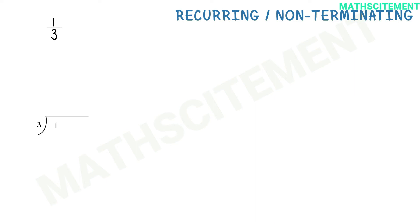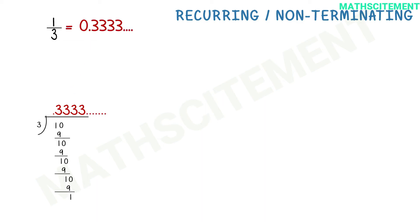Now let us understand what a non-terminating or recurring decimal number is. We will solve the fraction 1 by 3. The remainder will never be 0, so the digit 3 in the quotient keeps on repeating infinitely. Such decimal numbers that keep on repeating to an infinite extent are called recurring or non-terminating decimal numbers. We use a bar to represent the repeating digit.